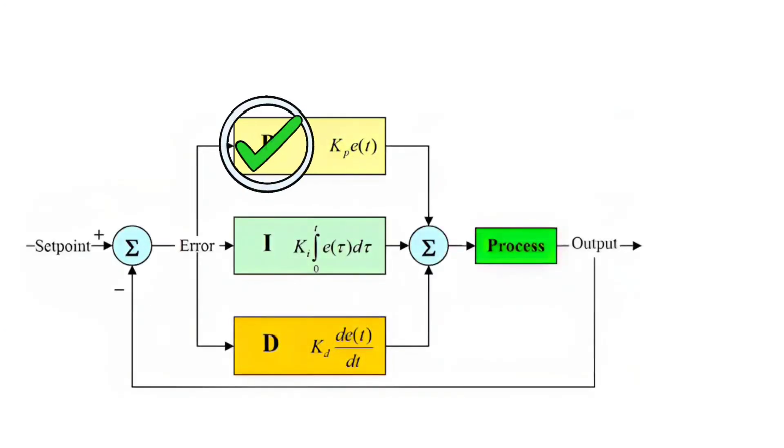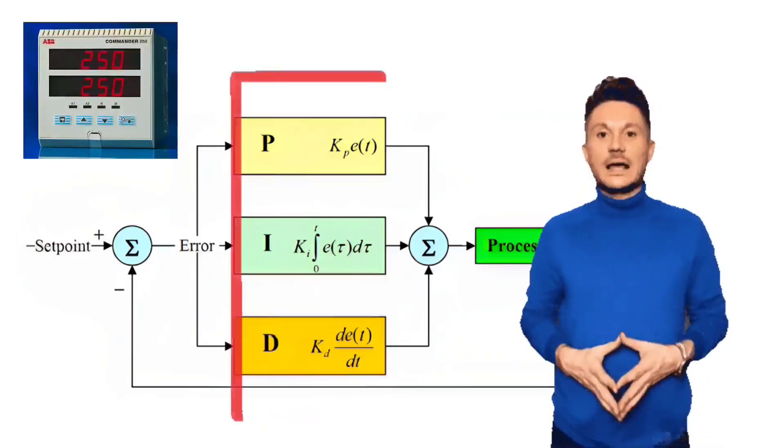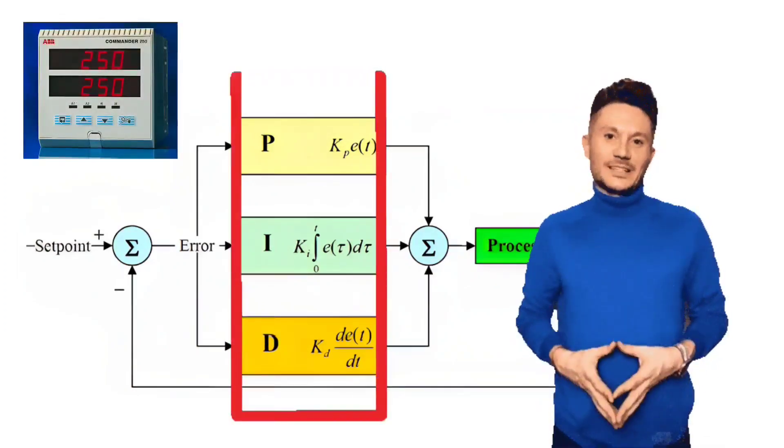So friends, first you set the proportional control, then set the integral control, and then set the derivative control. So friends, in this way you can adjust the values of P, I, and D according to your applications.